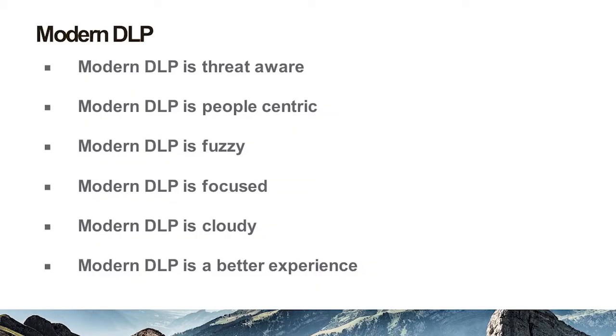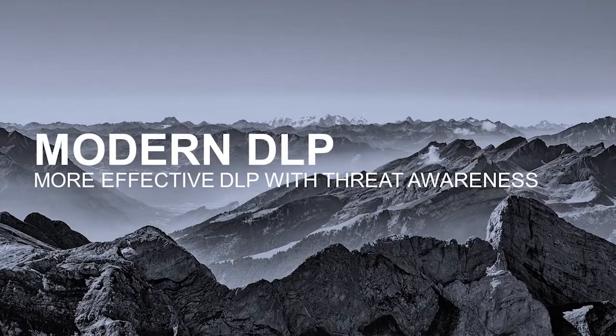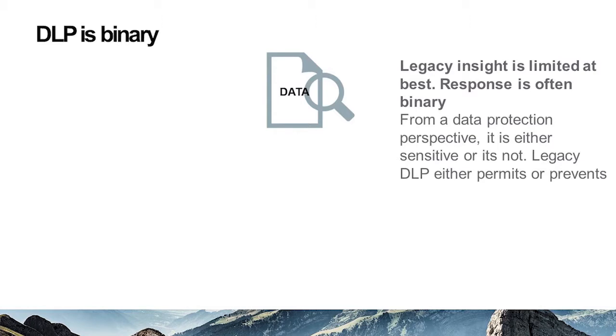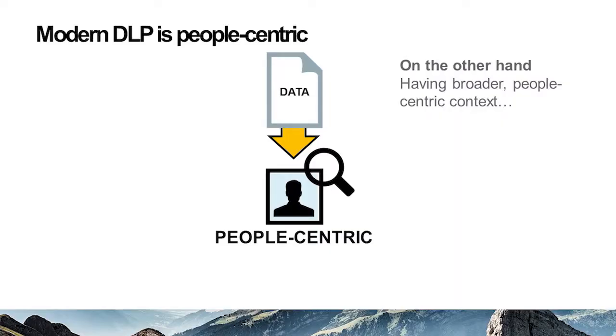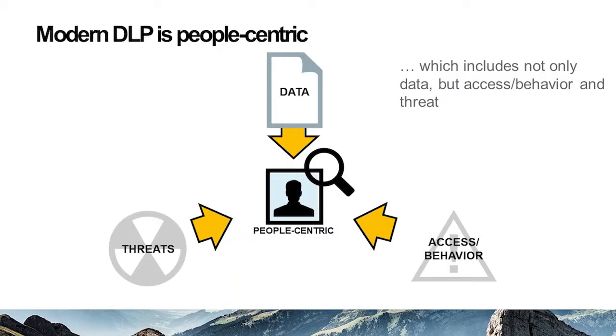Let me walk through a use case that pulls these observations together. If we look at an effective DLP deployment with threat awareness: traditional DLP is binary — from a data protection perspective, data is either sensitive or it's not; it either permits or blocks communication. But if we look from a people-centric view, data is one axis. Another axis is access and behaviors. The third axis is explicit threat intelligence. Let's go through that example.